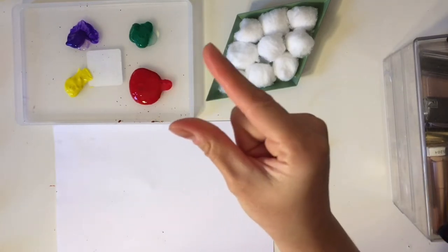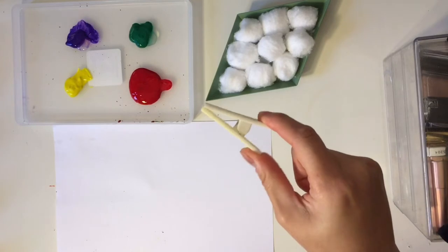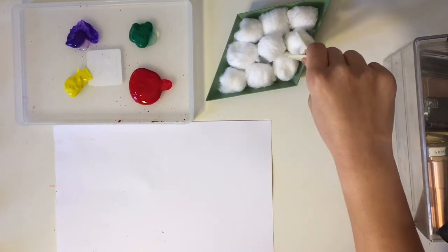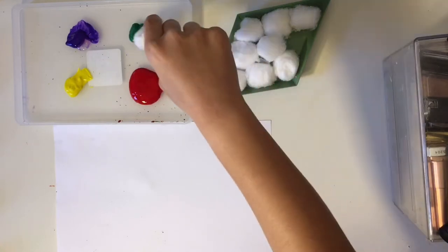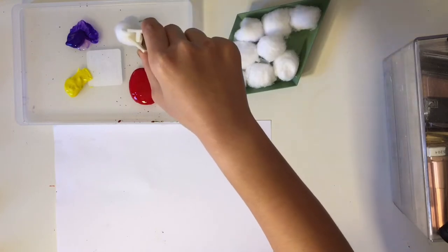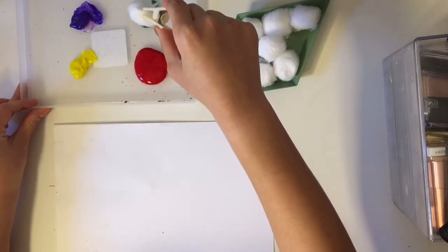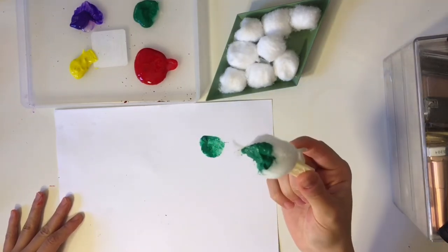Great. And now let's use our finger. Click. Choose one cotton ball and choose a color you like. Put it on the paper.